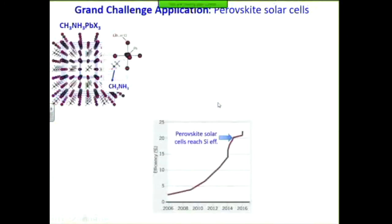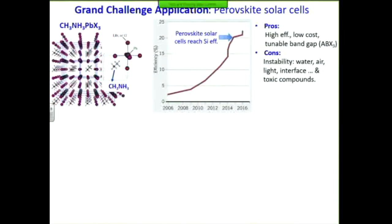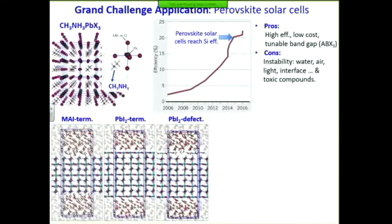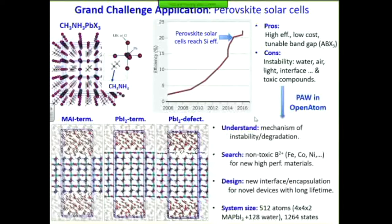In the end, the application we want to simulate is the perovskite solar cell — the material everyone is talking about. The good thing about this material is that it has very high efficiency, low cost, and you can tune the band gap, making it flexible for different applications. The bad thing is that the material is unstable under pretty much any environment. We want to do simulations on this large system with over 500 atoms — large for DFT calculations. We also want to search for substitution elements for lead, which is where PAW plays a really important role in making calculations efficient. We also want to design new interfaces in terms of encapsulation methods to protect the material.